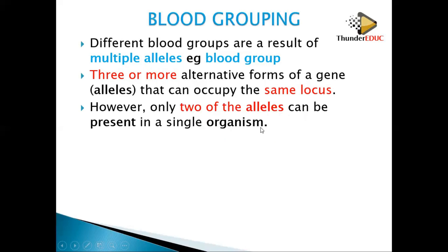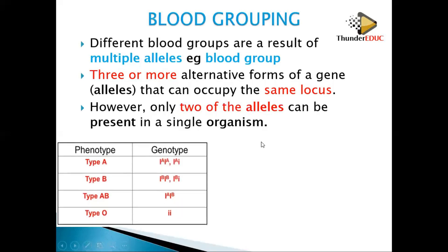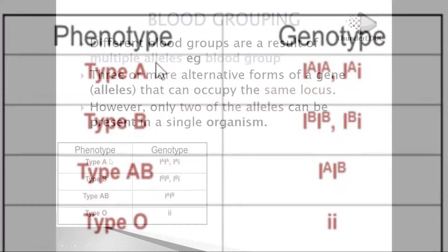However, only two of the alleles can be present in a single organism, because you have two parents — a father and a mother. One allele comes from the father and one from the mother. One of each comes from each parent and they combine to form your alleles.